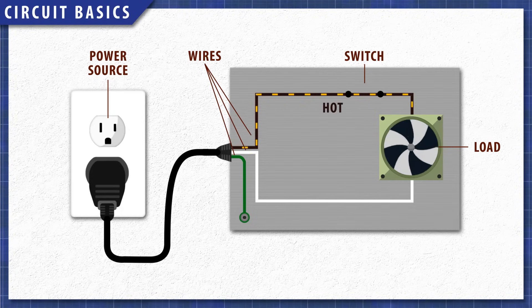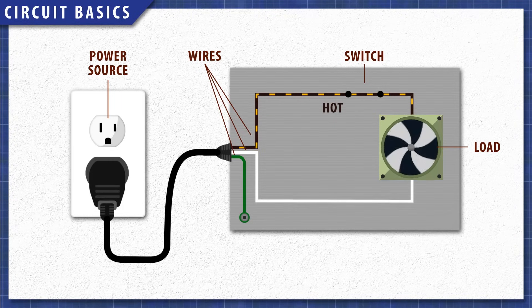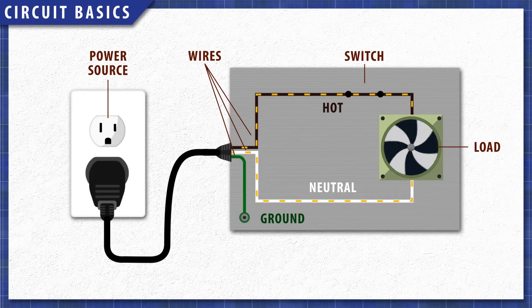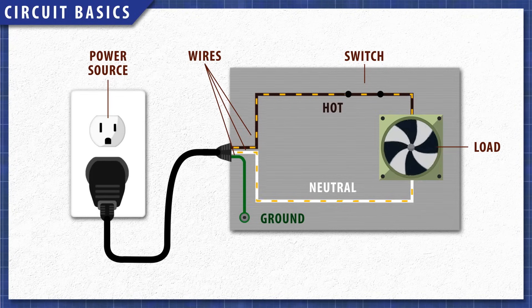The hot wire or line carries the power to the load, and the neutral wire returns the electricity to the power source. The ground wire is usually green and is connected to the metal appliance housing. This provides a safe path to return to the source and will protect against electrocution.